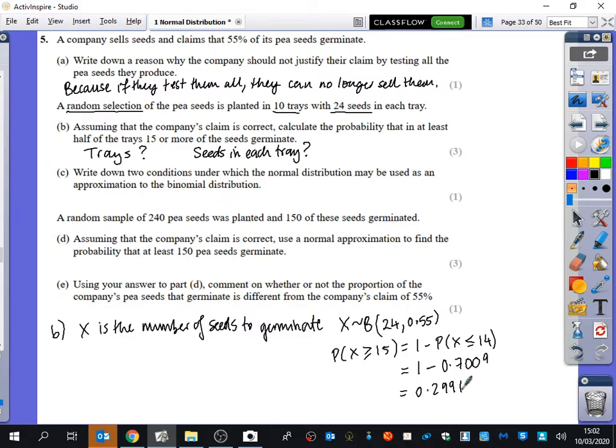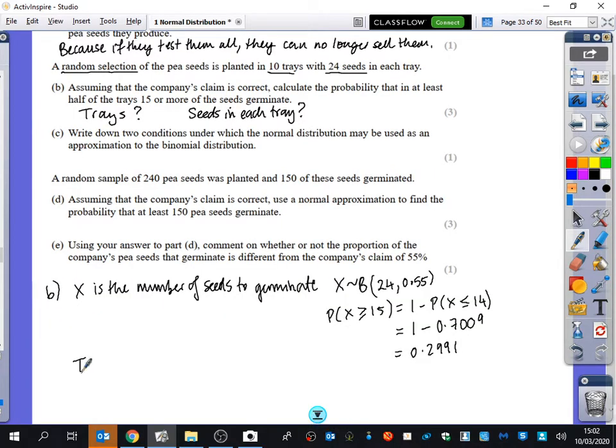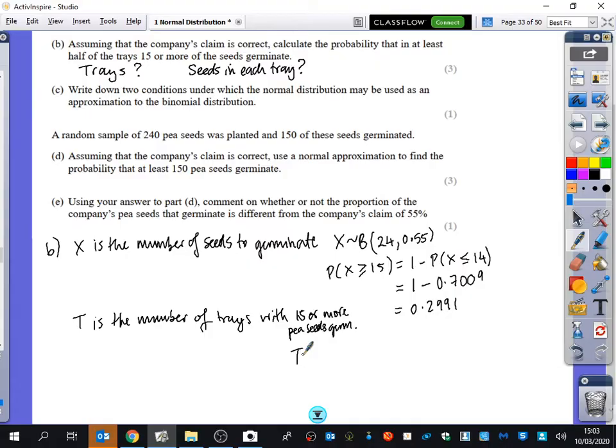Now that's the probability that there will be 15 or more seeds in one tray germinating. So we now need to go on to the next thing and actually figure out what's going to happen. We need to say something different. I might say that T is the number of trays with 15 or more pea seeds germinating. So we now think that T is going to also be binomially distributed. There are 10 trays and the probability that 15 or more of them will germinate is 0.2991.